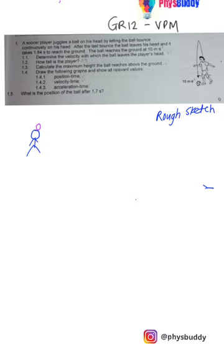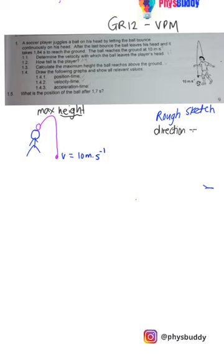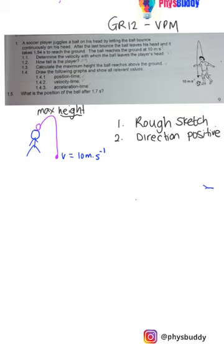Remember, he's bouncing the ball upwards, so the ball will reach a maximum height and then reach the ground. They say the ball reaches the ground with a velocity of 10 meters per second. So the first thing I'm going to do is choose a direction positive. I'm taking downward motion as positive. We do not know the initial velocity, but we know the final velocity was 10 m/s — positive 10, since down is positive — and acceleration due to gravity is positive 9.8 m/s² downwards.